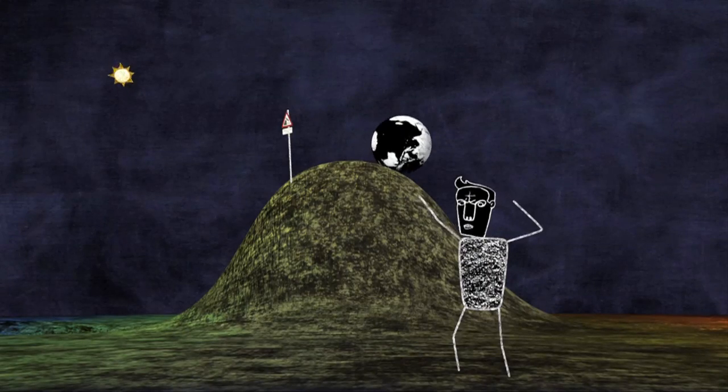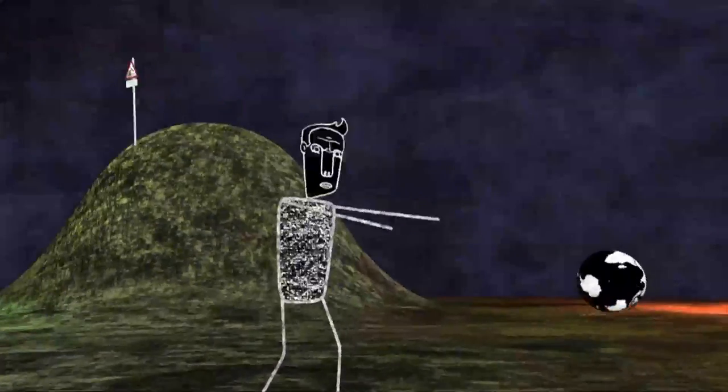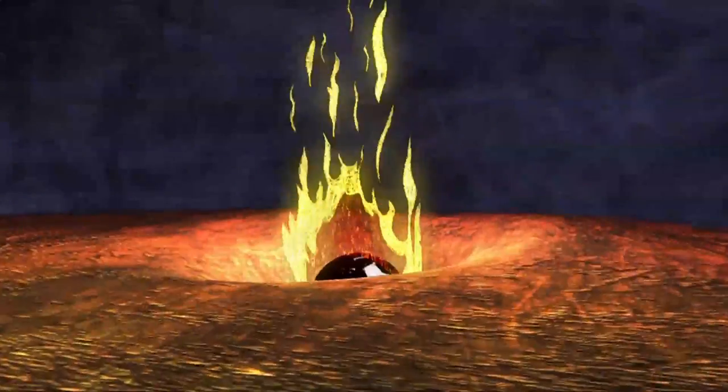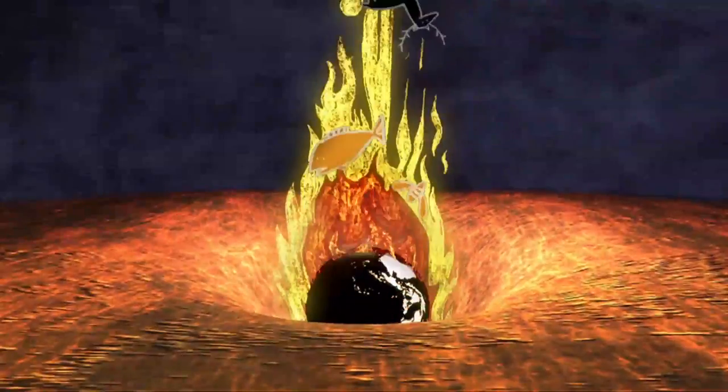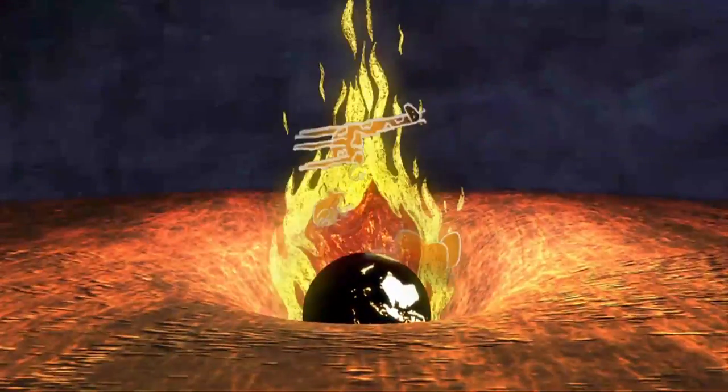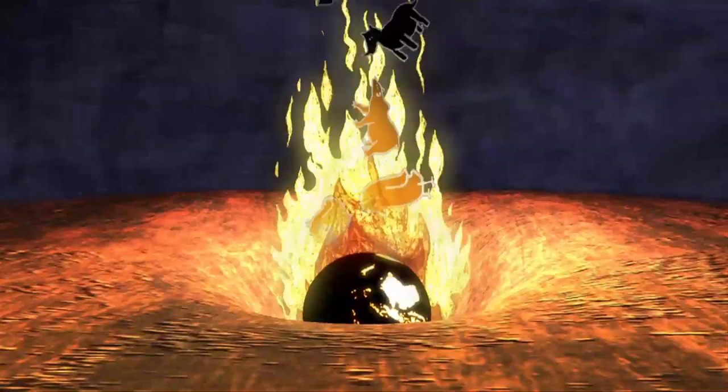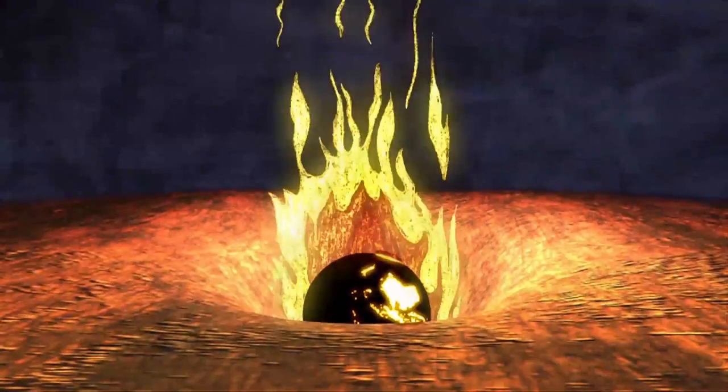If we do pass this critical threshold, global temperatures could soar by as much as 6 degrees. If this happens, the natural world will suffer a mass extinction event which will wipe out the majority of the plants and animals with which we currently share the planet.